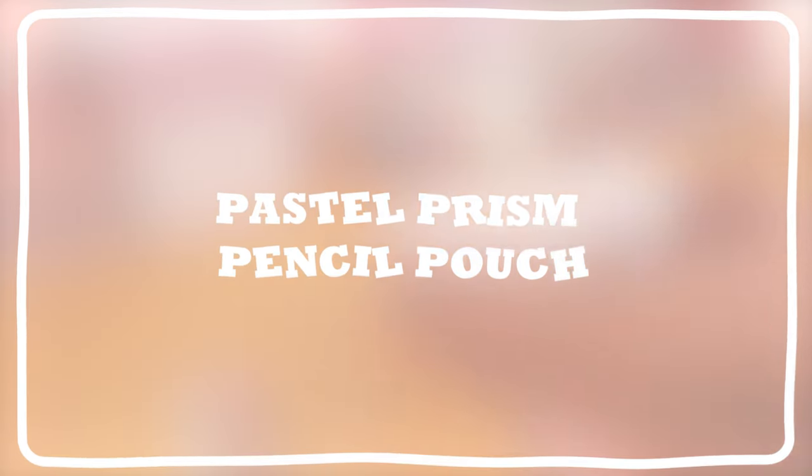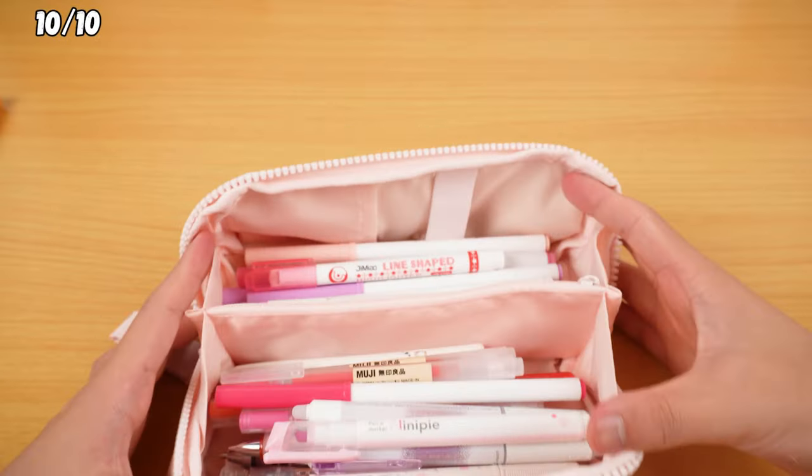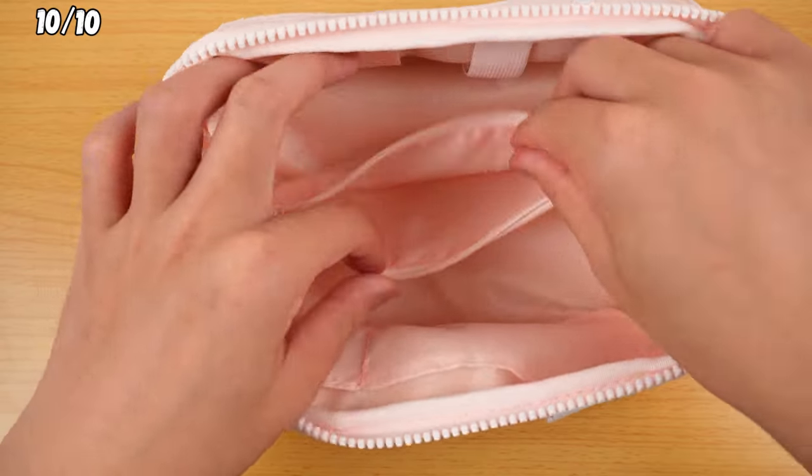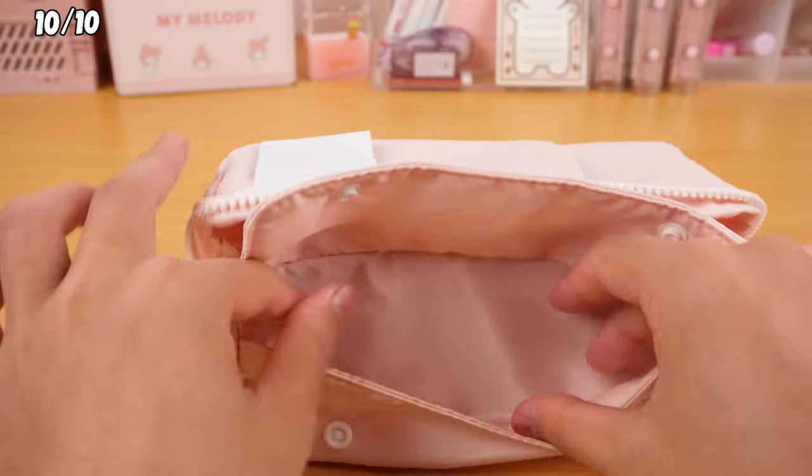Pastel Prism Pencil Pouch. It's got a massive capacity, perfect for stashing your stationery or any other bits and bobs. There's a small pocket in the middle for those tiny items, and don't forget the little pockets on the inside and outside.